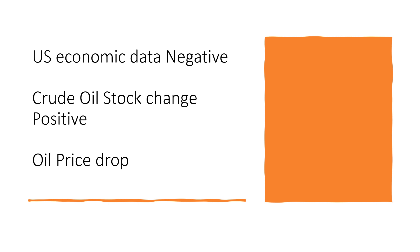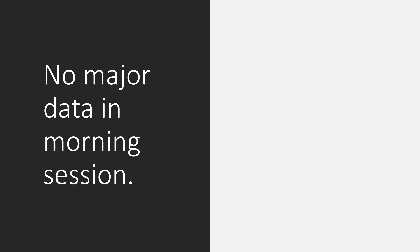The crude oil stock change report is positive for the oil price drop, which supports the dollar index. The gold price drop and the silver price drop — the price changed in the morning on the major data. Trading data is not major, but the dollar index strength is important. The dollar index is linked to the price, so we will see the actual items.